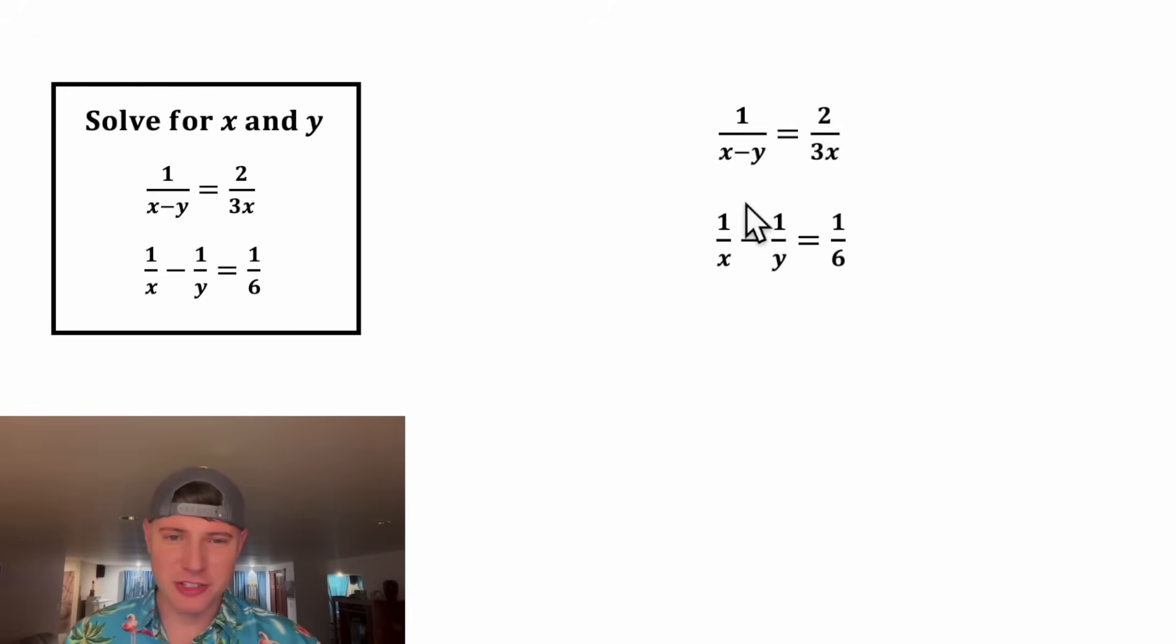Let's focus on the top equation first. I don't really like fractions, so let's get rid of these two denominators. To get rid of this x minus y, let's multiply both sides by x minus y, and to get rid of the 3x, let's multiply both sides by 3x. On the left-hand side, the x minus y cancels out, so we're left with 3x. On the right-hand side, the 3x cancels, leaving us 2 times the quantity x minus y, which distributes to give us 2x minus 2y.